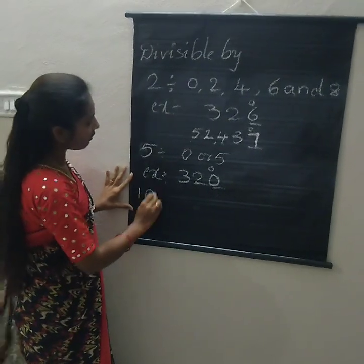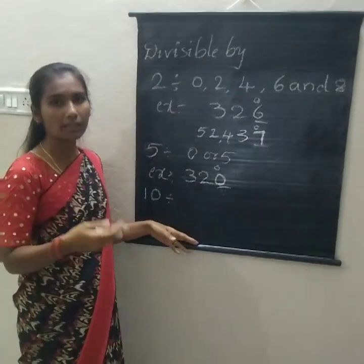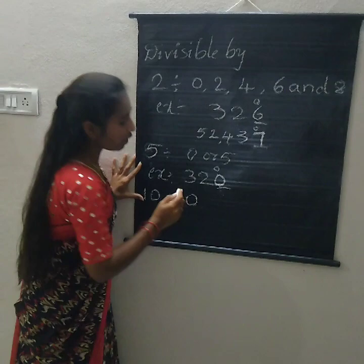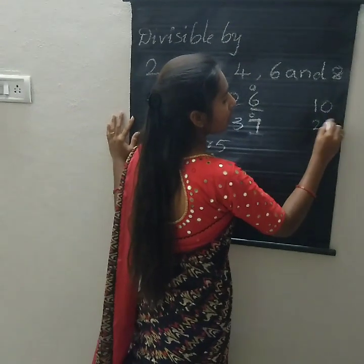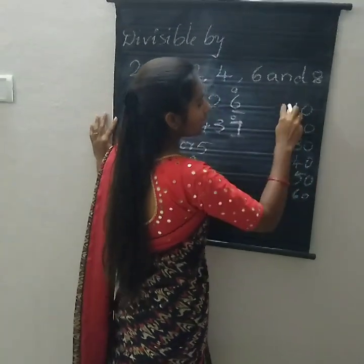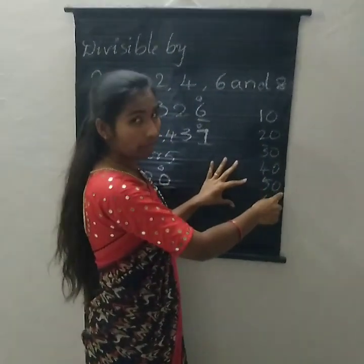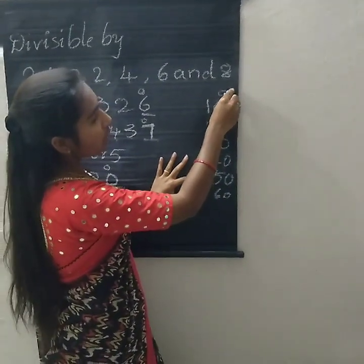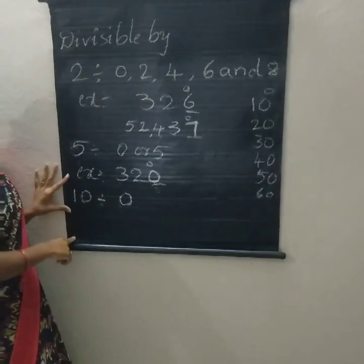Next I am explaining the divisibility of 10 rule. The divisibility of 10 rule is very easy — only the one's place should be 0. We can check in the 10 times table also: 10, 20, 30, 40, 50, 60. In the 10 times table, the one's place is always only 0. So only 0 is the rule for divisibility by 10.